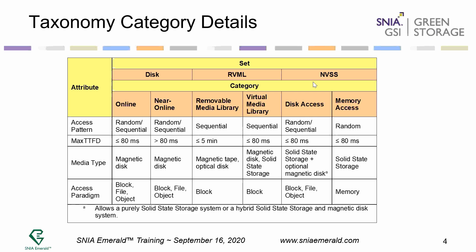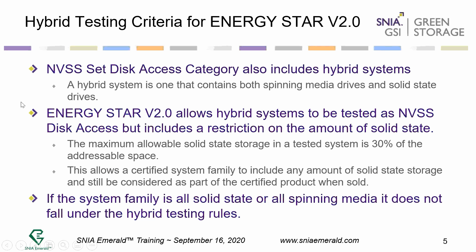This gives information on the hybrid testing category for ENERGY STAR. The NVSS set disk access category also includes the hybrid system. A hybrid system contains both spinning media drives and solid-state drives. ENERGY STAR allows a hybrid system to be tested as NVSS disk access, but with a restriction on the amount of solid-state. When testing a hybrid system, the maximum allowable addressable space is 30% in solid-state, and the balance must be in spinning media. It can be less solid-state, but no more than 30%.